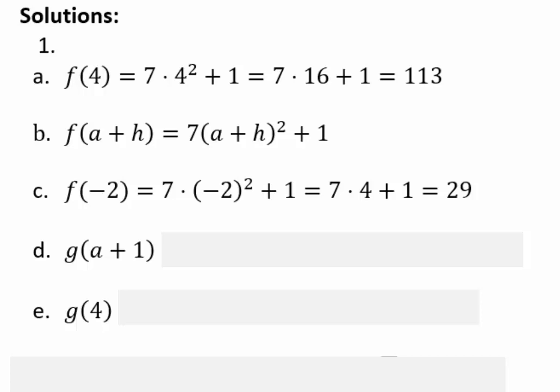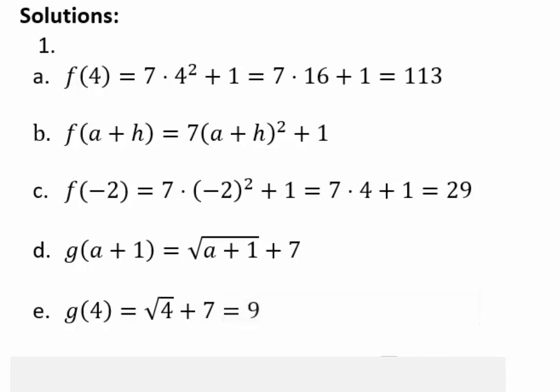Let's take a look at g. The input for g in the original function is t, and now you have g of a plus 1, so you would replace t with a plus 1, giving you square root of (a plus 1) plus 7. For g of 4, replace t with 4 — you'll have square root of 4 plus 7. Square root of 4 is 2, and 2 plus 7 is 9.